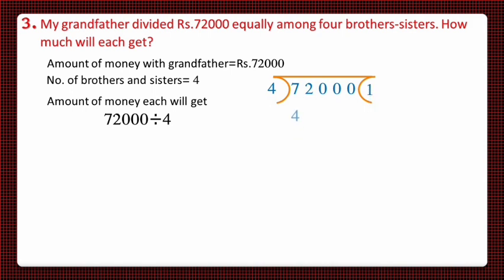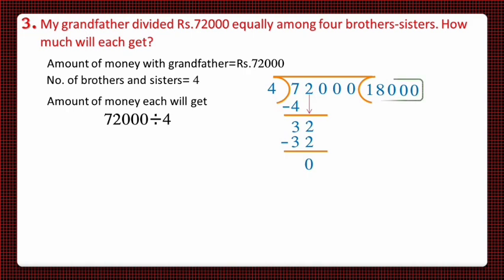Four ones are 4, so 7 minus 4 gives remainder 3. We bring down 2, and on the table of 4, 8 comes at 32; subtracting 32 from 32 leaves 0. Bringing down all the zeros one by one, we get the answer 18,000. So the amount each will get is 18,000 rupees — the same answer as from the informal method.